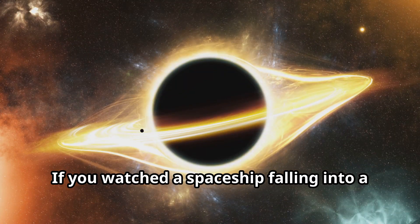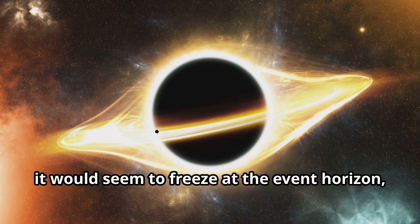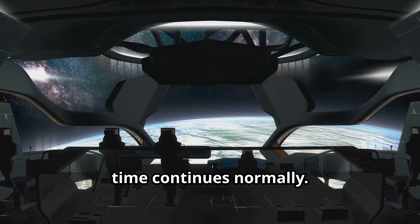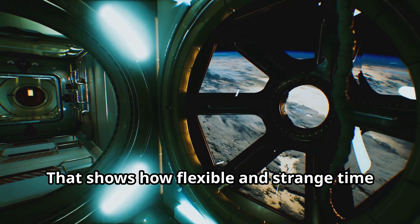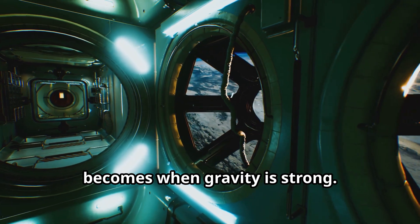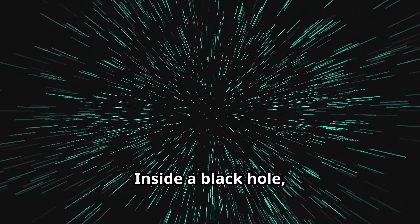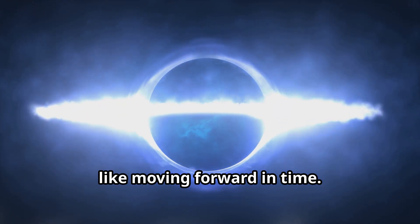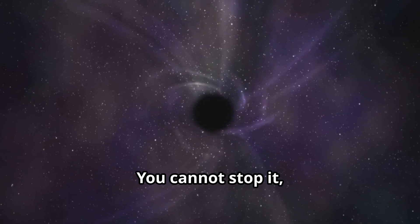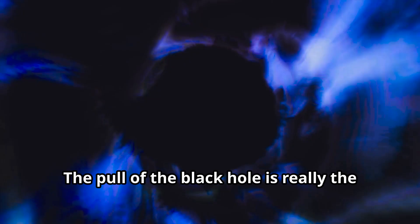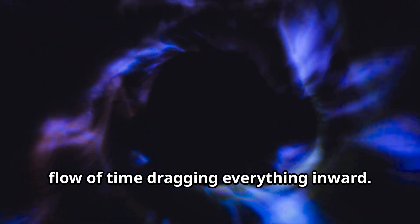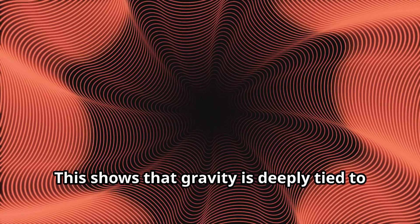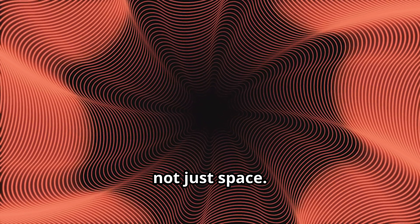If you watched a spaceship falling into a black hole, it would seem to freeze at the event horizon, never quite crossing over. But from the spaceship's point of view, time continues normally. That shows how flexible and strange time becomes when gravity is strong. Inside a black hole, time and space switch roles. The direction toward the center becomes like moving forward in time. You cannot stop it and you cannot turn around. The pull of the black hole is really the flow of time dragging everything inward. This shows that gravity is deeply tied to the flow of time, not just space.